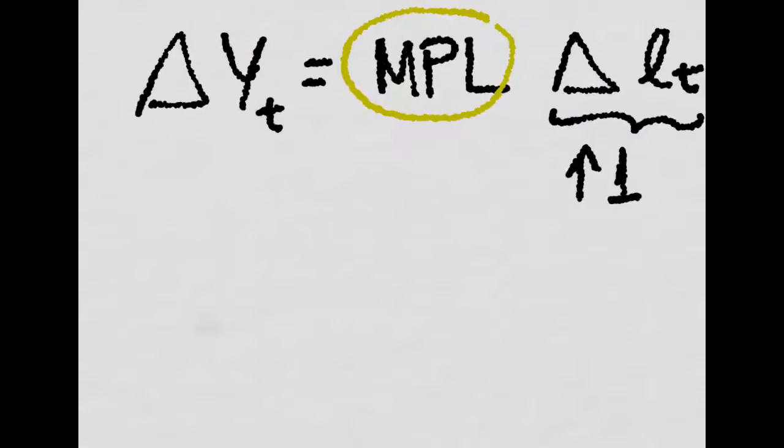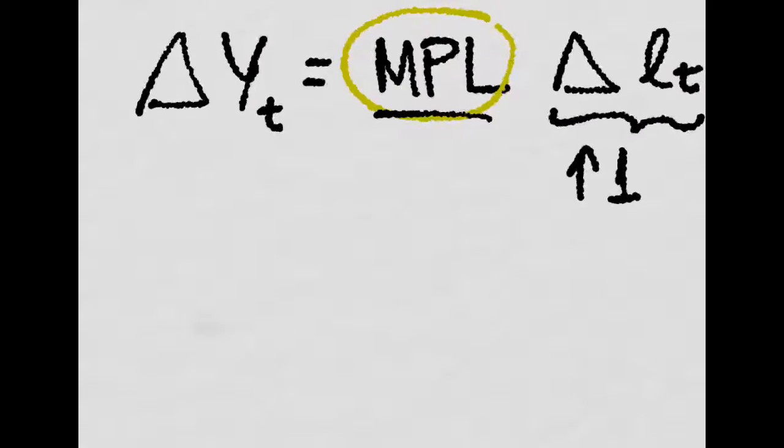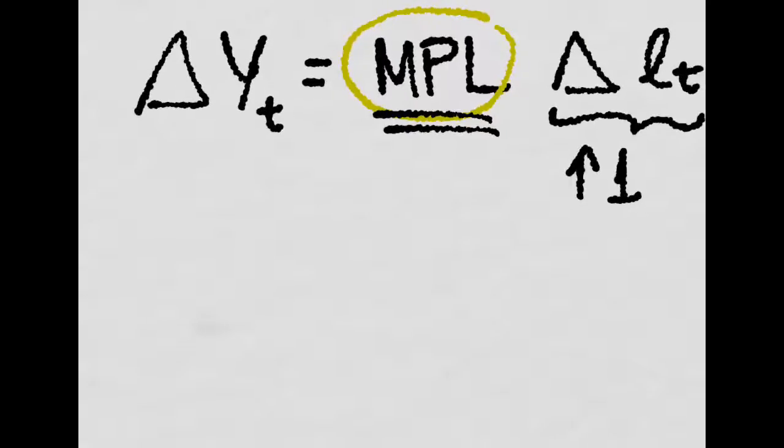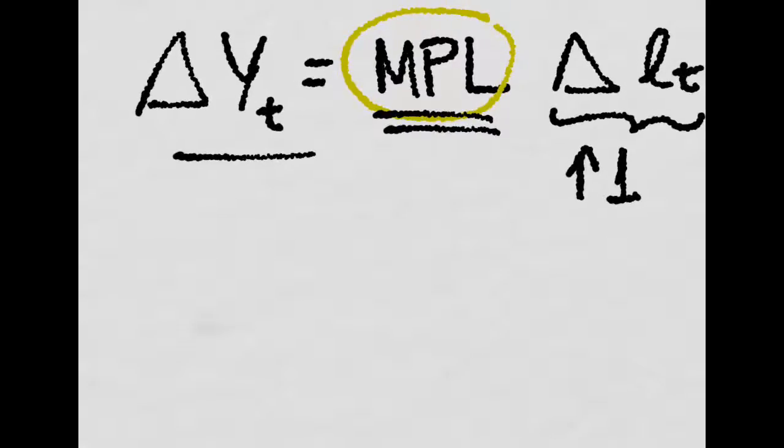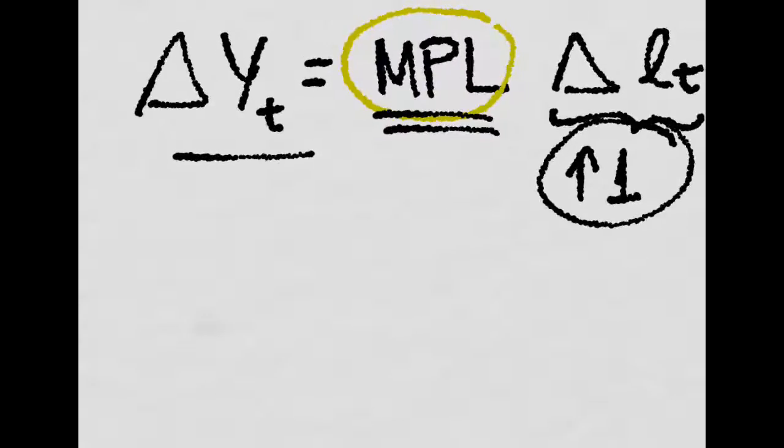In other words, if we define the marginal productivity of labor, MPL, as the additional output produced by one more hour worth, one more unit of labor,